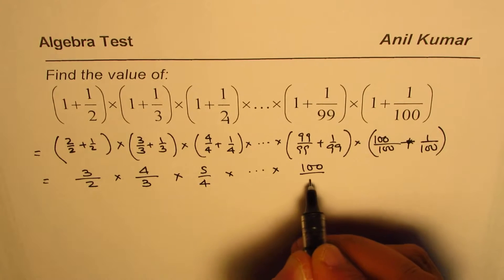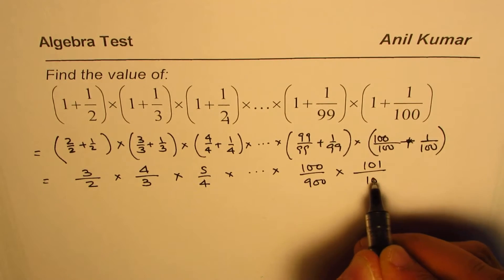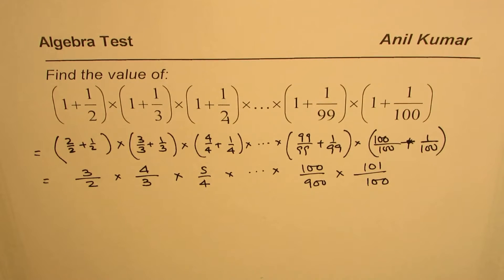Times one hundred and one over one hundred, right? So that is what you get. Now do you see how we can simplify it?